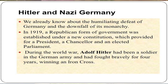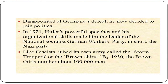Following the humiliating defeat of Germany and the downfall of its monarchy, in 1919 a republican form of government was established under a new constitution which provided for a president, a chancellor and an elected parliament. Adolf Hitler had been a soldier in the German army, fighting bravely for four years and winning an Iron Cross. Disappointed at Germany's defeat, he decided to join politics. In 1921, Hitler's powerful speeches and organizational skills made him the leader of the National Socialist German Workers' Party — in short, the Nazi Party. Like the fascists, it had its own army called the Storm Troopers, or the Brown Shirts.